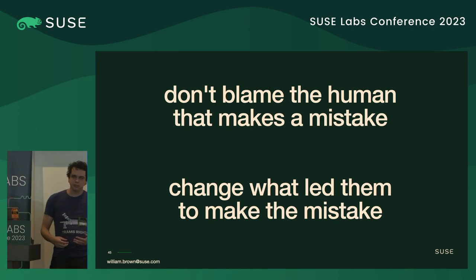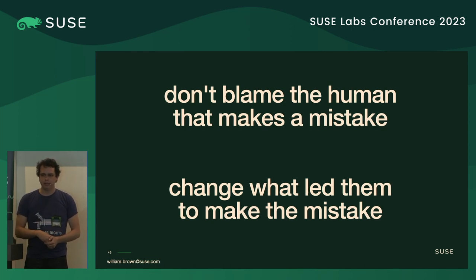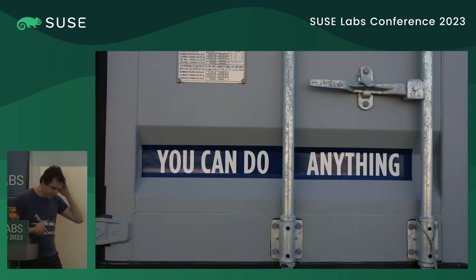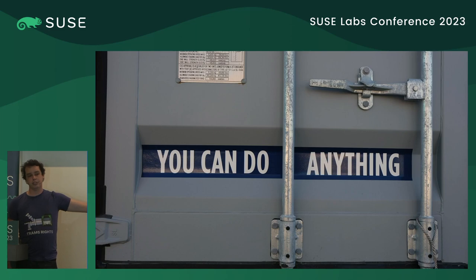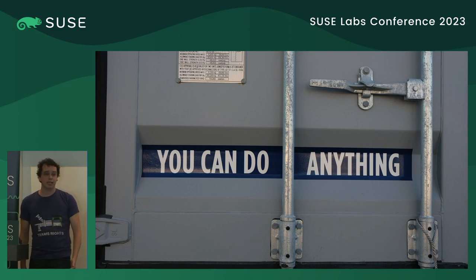When we improve these things, we don't just improve it for ourselves — we improve it for people whose English is not their first language, people with accessibility needs, different cultures, different backgrounds. We make software more usable and empowering for people. It can be hard to change old software, but we have to be willing to examine ourselves, the interfaces we create, and adapt. Those changes are worthwhile — the gains in user experience are really worth pursuing.